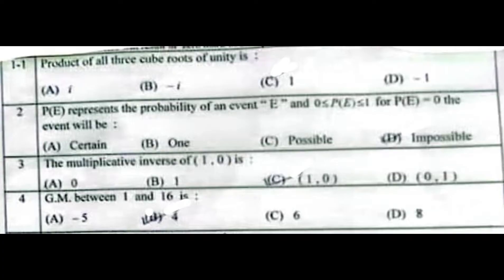Product of all three cube roots of unity is 1. P(E) represents the probability of an event E, and P(E) greater than or equal to 0, less than or equal to 1. For P(E) equal to 0, the event will be impossible. You can find this on page number 244 in the book. The multiplicative inverse of 1,0 is 1,0. GM between 1 and 16 is 4, on page number 209.